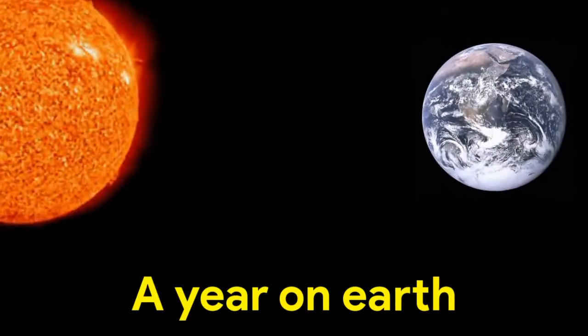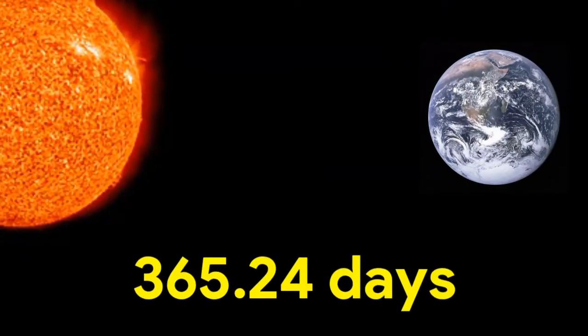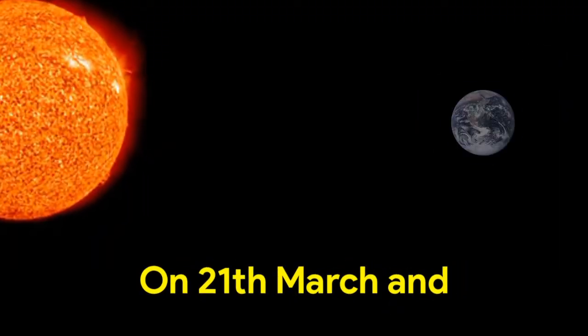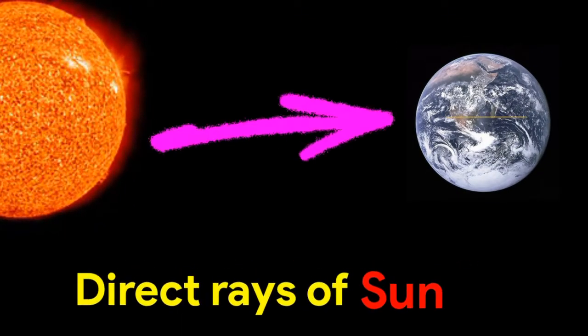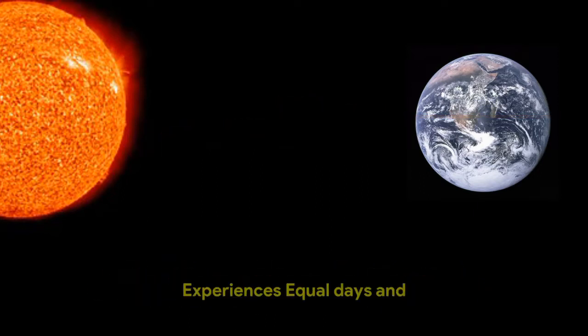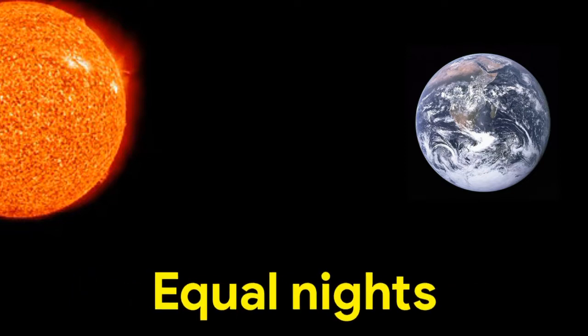A year on Earth lasts 365.24 days. On 21st March and September 23rd, direct rays of Sun fall on the equator. So, the whole Earth experiences equal days and equal nights. This is called an equinox.